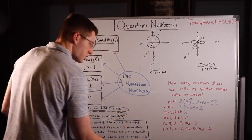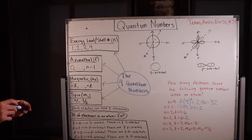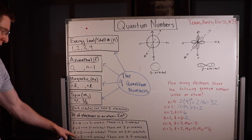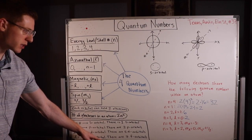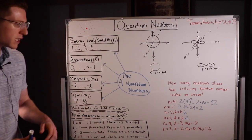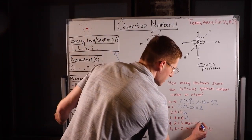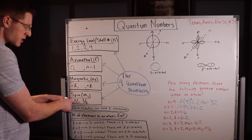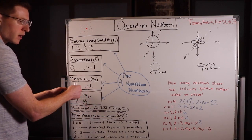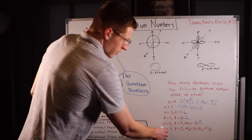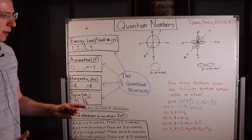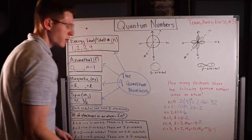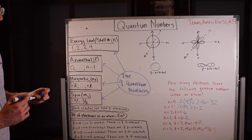For N equals 4, L equals 3, M sub L equals negative 3: since L equals 3, we're in an f orbital. We've picked one specific orbital with M sub L equals negative 3. Within each orbital there can only be two electrons, so from here we can only assign positive or negative spin — that's two possible electrons. Finally, with all four quantum numbers specified, we have a complete address, and only one electron can possibly live there.